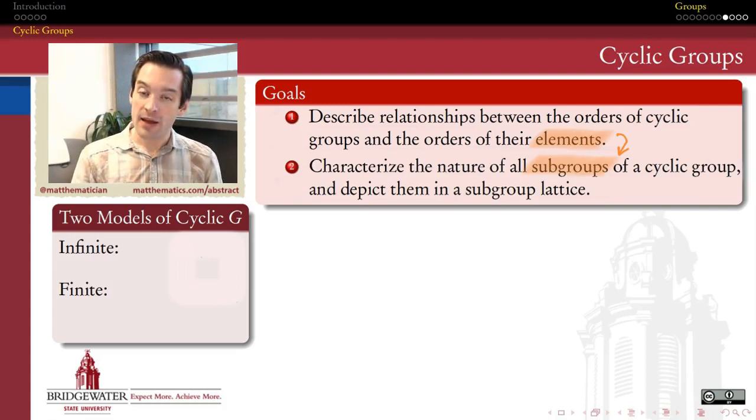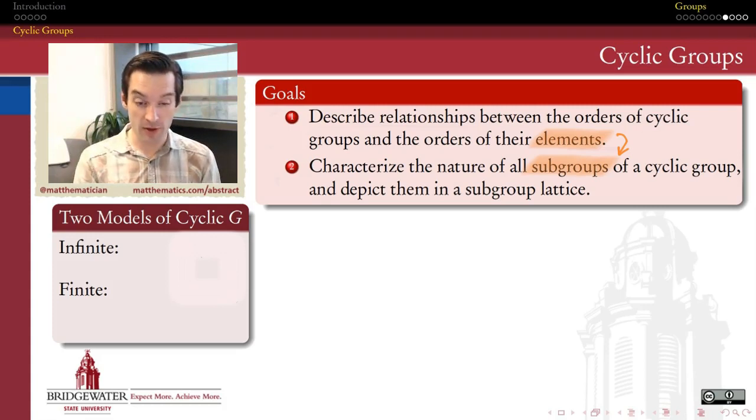And then secondly, if we can say something about the orders of elements in a cyclic group, then we should also be able to say something about the subgroups that reside within a cyclic group. What kind of subgroups do cyclic groups have and what's a way of trying to account for them all? And so we'll see in the last of the videos in this series how to construct a subgroup lattice for a group that can show us what are all the possibilities, what are all the subgroups that reside within the parent cyclic group.